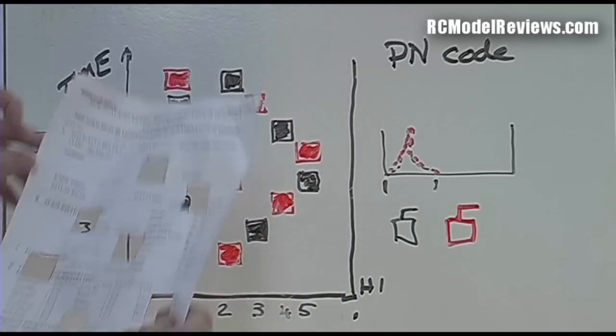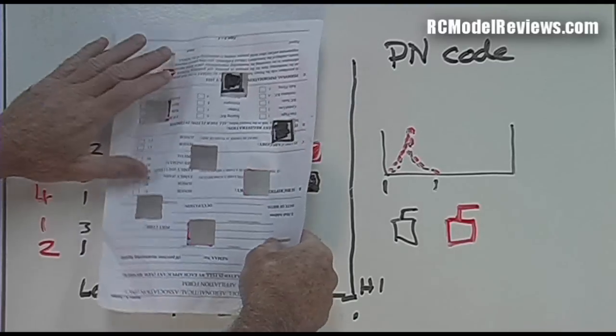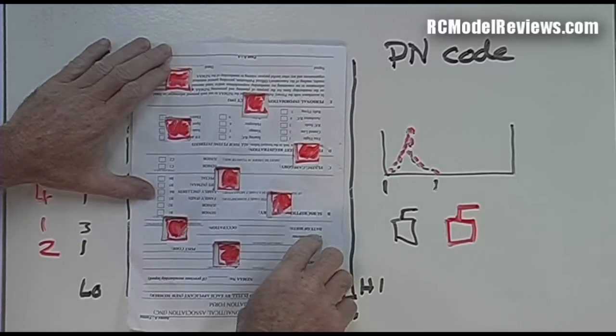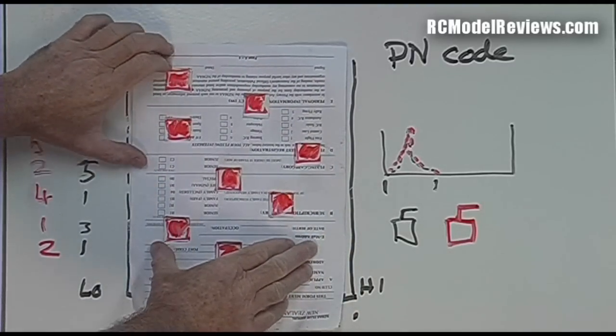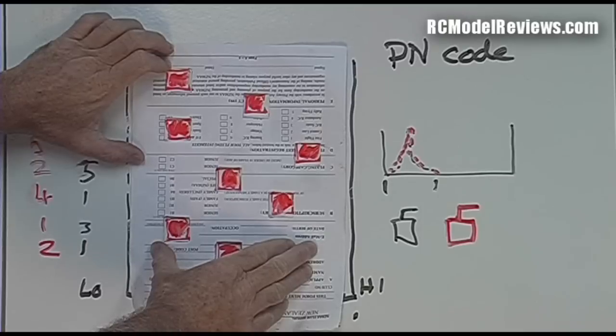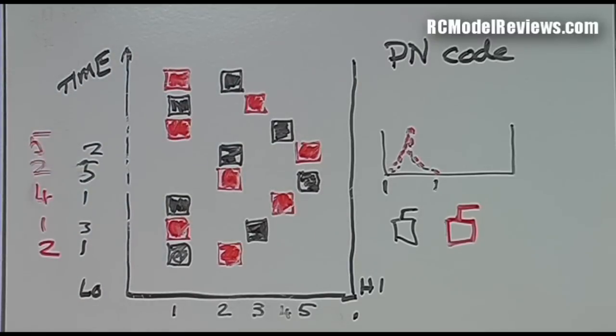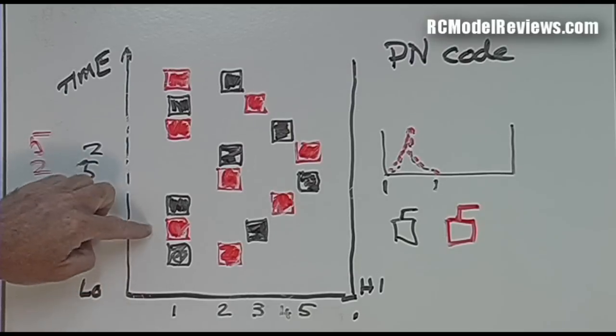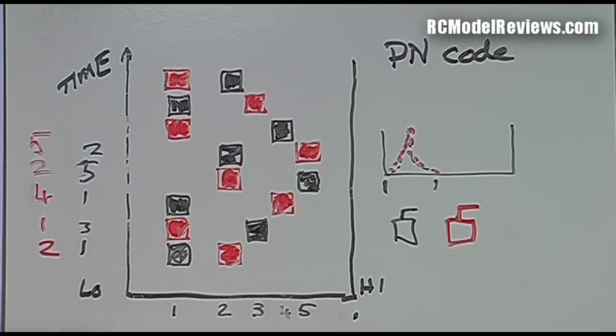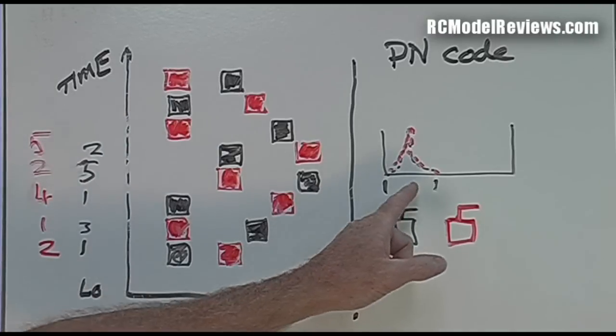When we fire up the black receiver, it knows the PN code so it has a little template that it puts over the entire band like this. What happens is the black receiver only ever sees black dots. It's not looking where the red dots are at that particular point in time. It's looking where the black dot should be, so effectively it completely ignores the red signal.